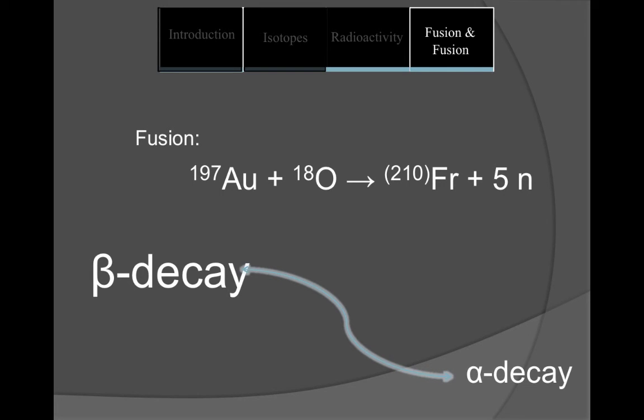Most isotopes of francium undergo fission in the form of beta decay, others a slight chance of alpha decay.